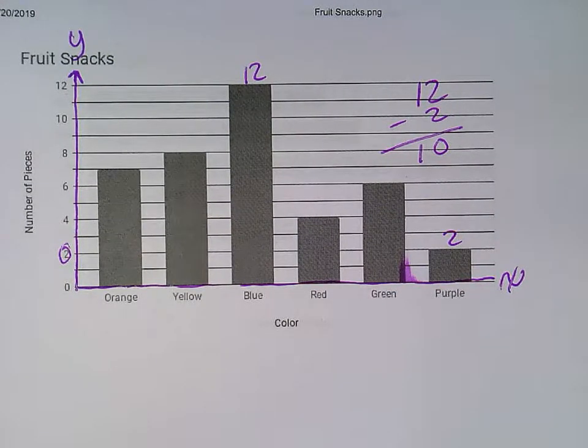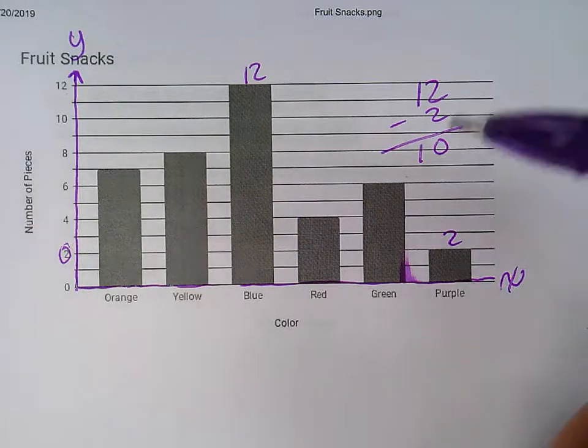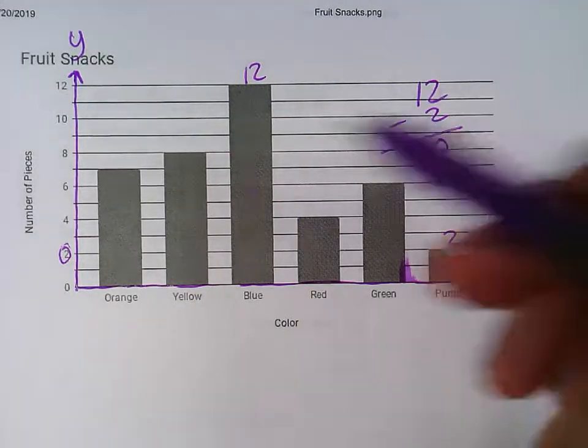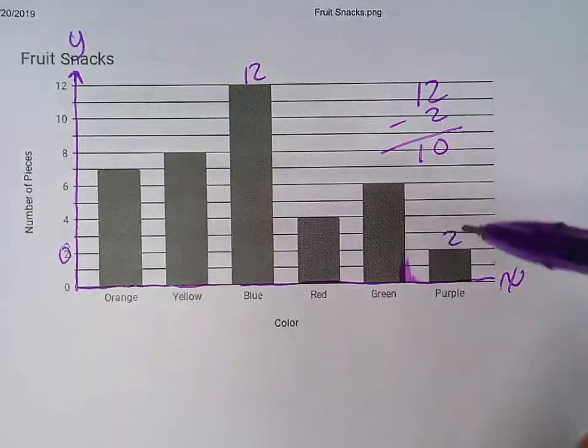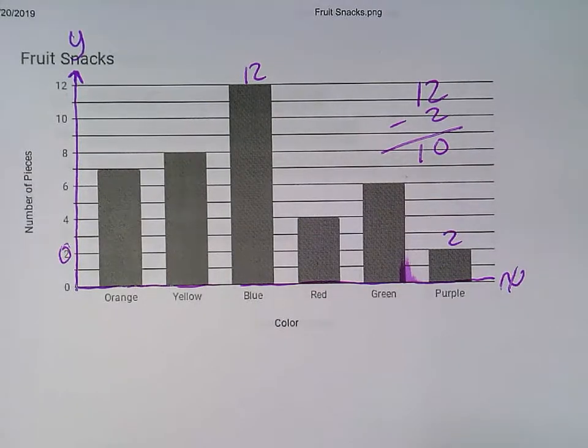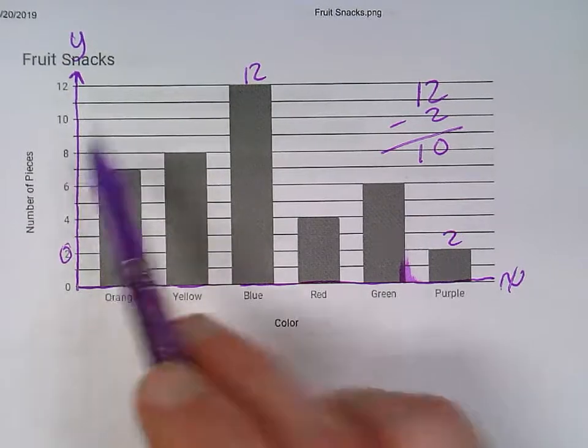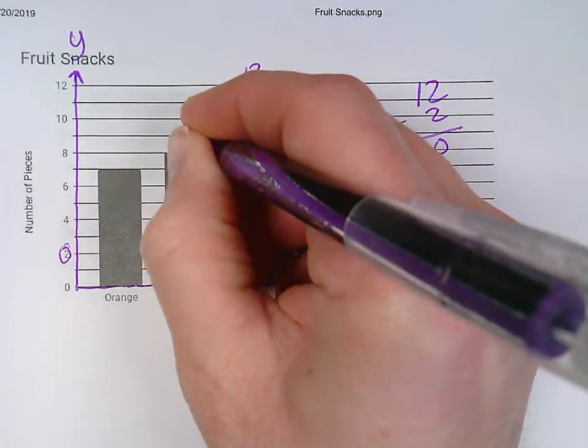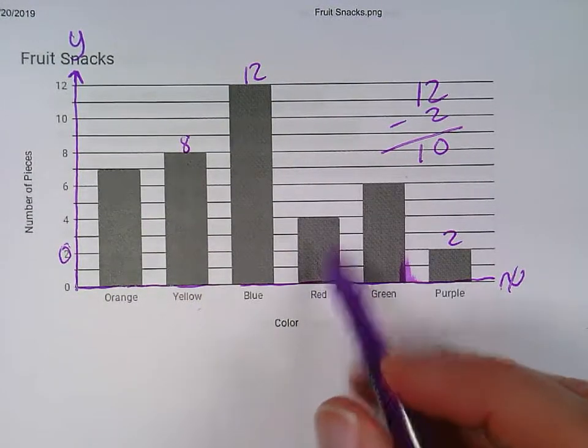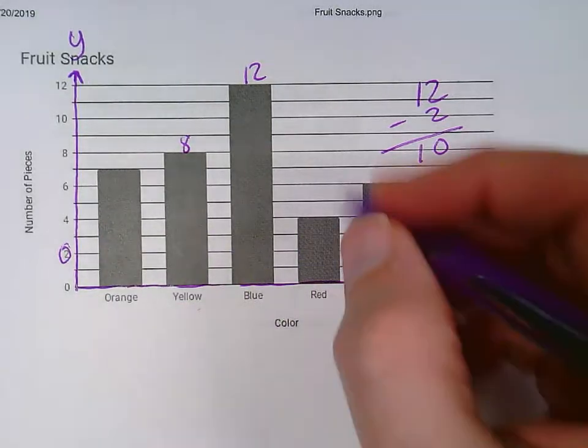Another question that they'll ask you on graphs is how many more, like how many more pieces of, how many more yellow fruit snacks were found than red fruit snacks. To get the answer to that, I once again need to subtract. So yellow, there's been 8 yellow pieces found, and there's been, go across, 4 red pieces that have been found.